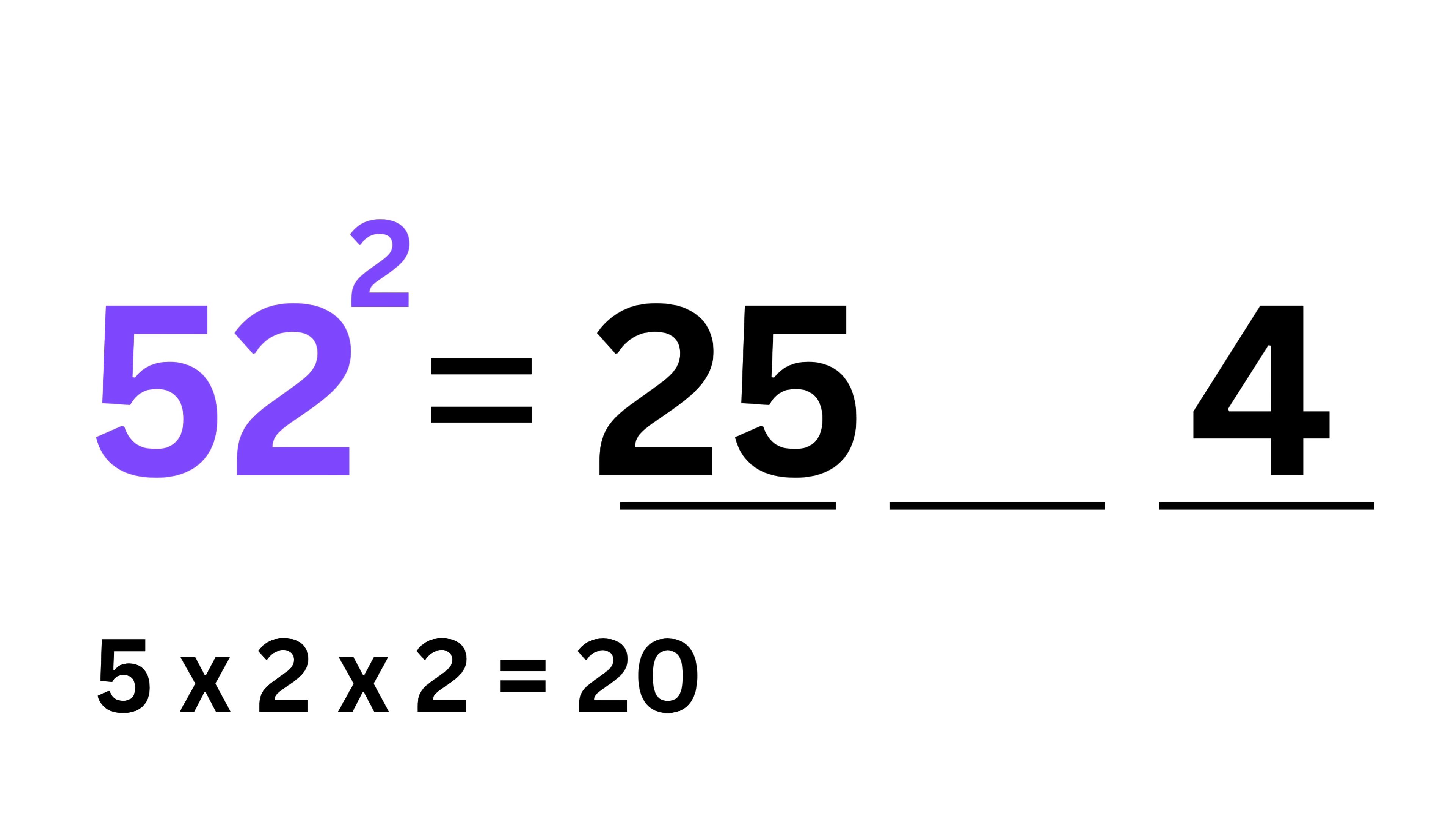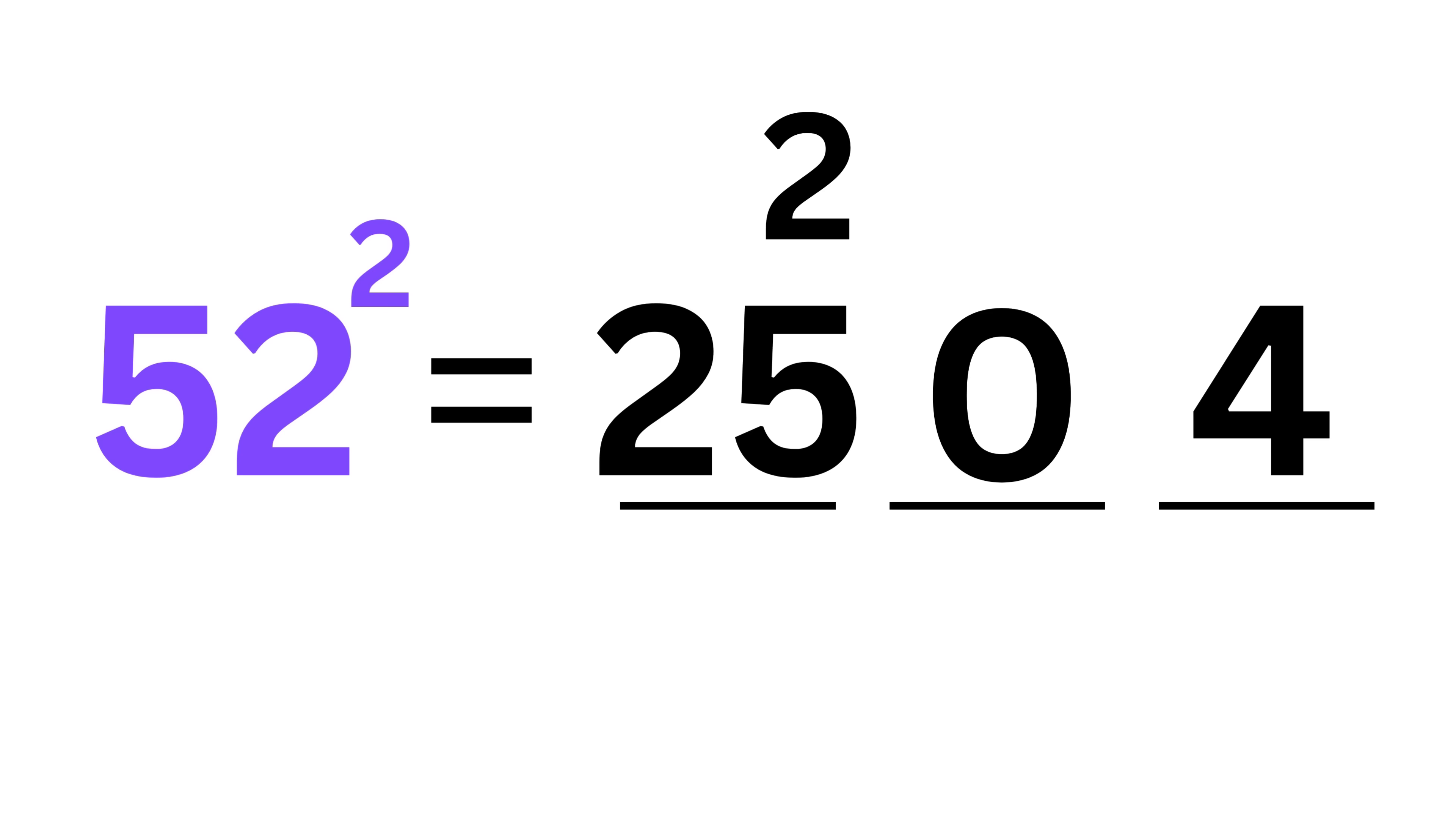Now pay attention. We cannot fit the number 20 in the middle spot. We only have space for one digit. So we keep the zero and we carry the 2 over to the left. Add that 2 to the 25, which gives us 27. The final result is 2704.